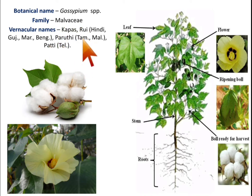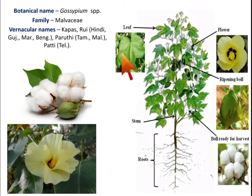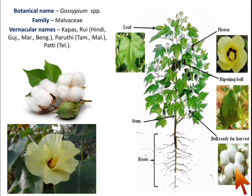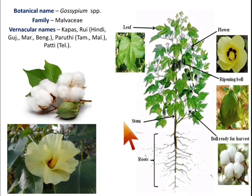Paruthi in Tamil Nadu and Malayalam, and pati in Telugu — these are some of the vernacular names of this crop plant in India. This picture shows the cotton plant: the leaf, the flower, and this structure is referred to as the cotton ball. When the cotton balls are ready for harvest, the white cotton fibers emerge from the boll. There are five bolls, and inside these white fibers are cotton seeds.